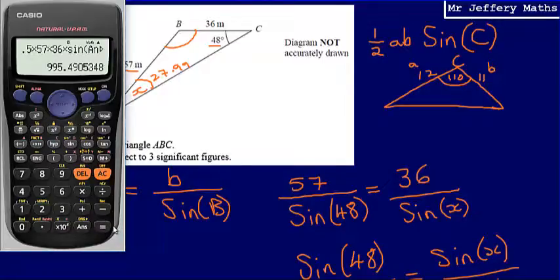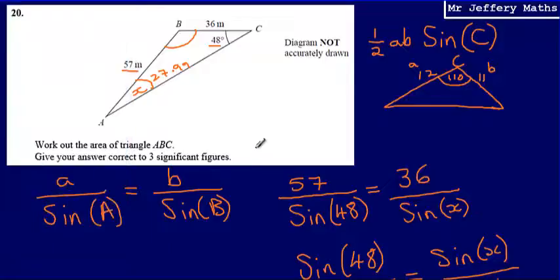And it says, give it correct to three significant figures. So we will call that 995 meters, meters squared because it's area. So final answer here, 995 meters squared.